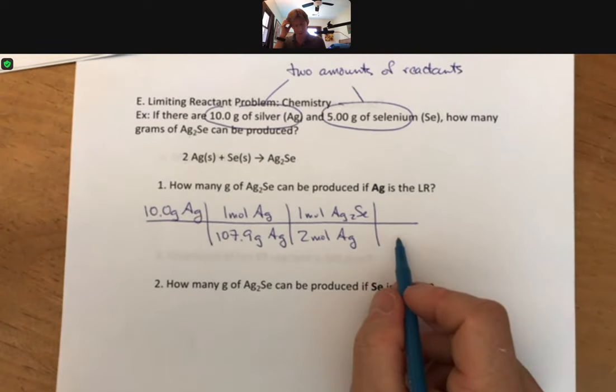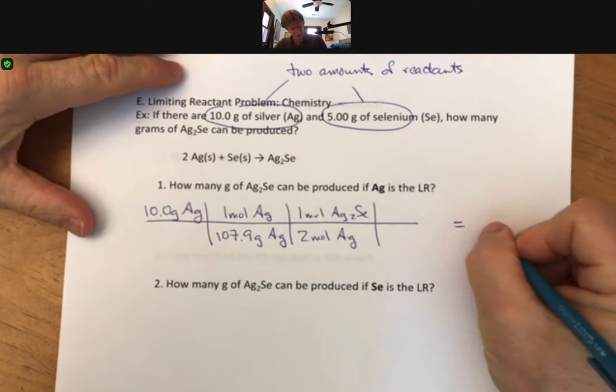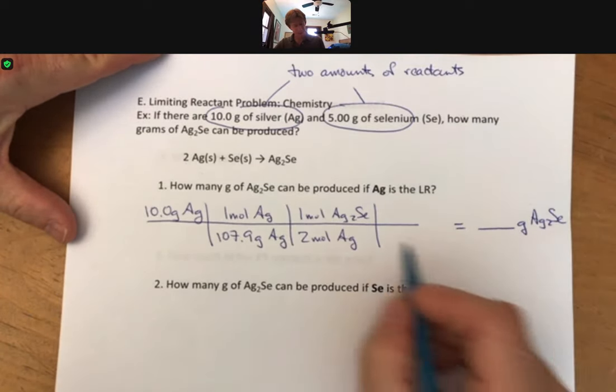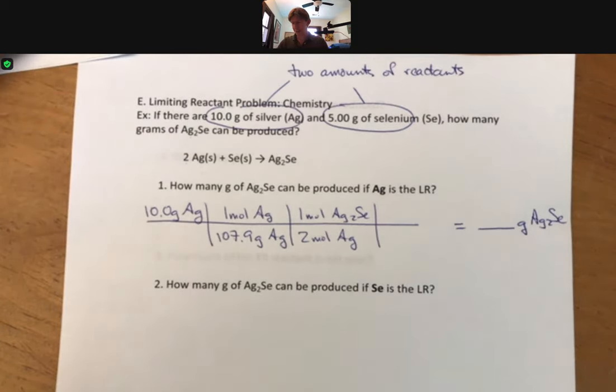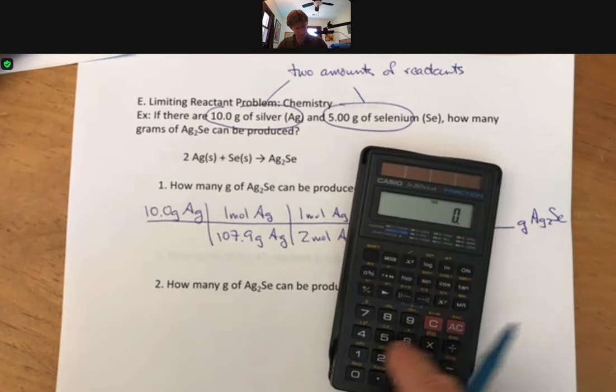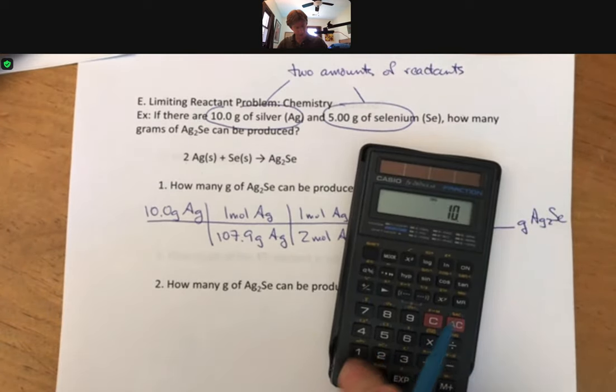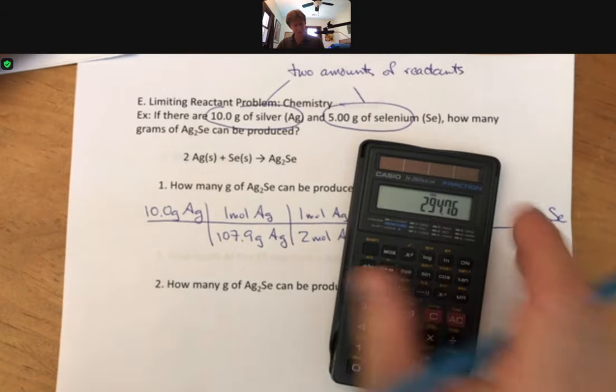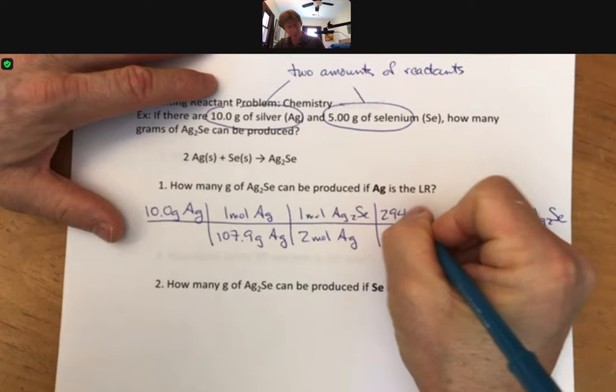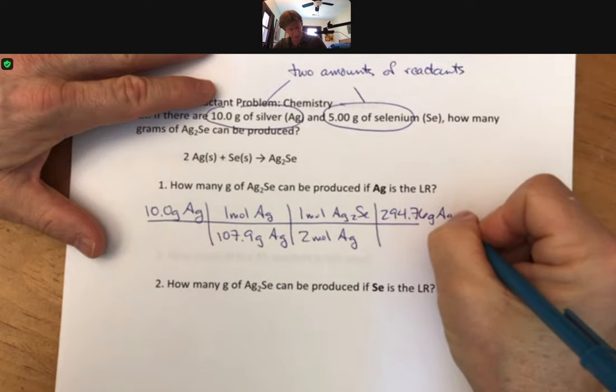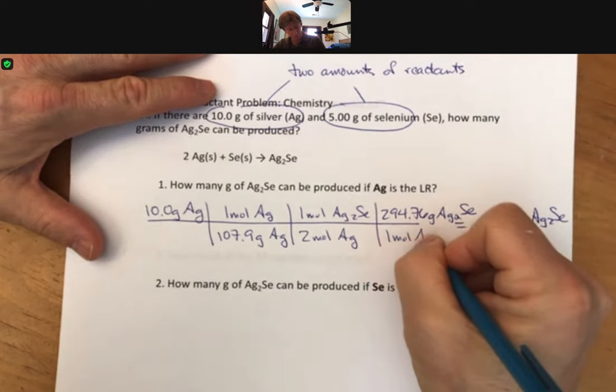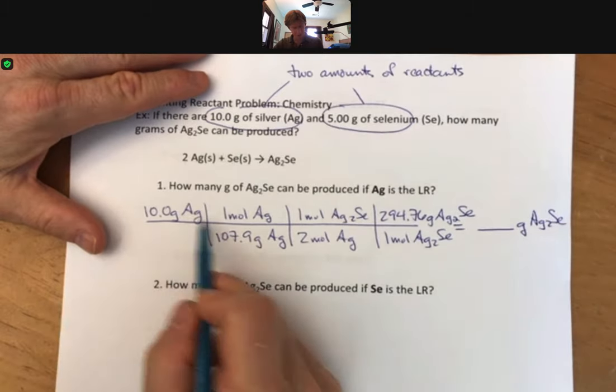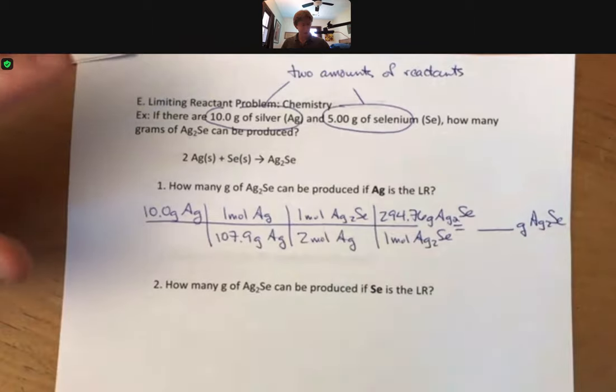Our last step is going to be a molar mass to get back to grams. I'm still on the page, grams of silver selenide. So I need my molar mass again. Selenium is 78.96 plus 107.9 plus 107.9 for two silvers. Looks like 294.76. That's going to be grams of silver selenide per one mole of silver selenide. Does everything look right there? My units are canceling. I think everything looks good there. Let's go ahead and calculate the answer.